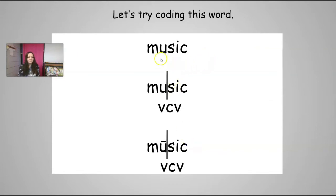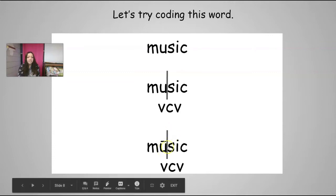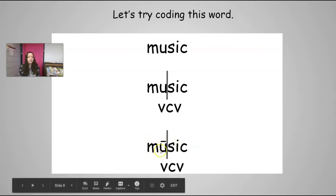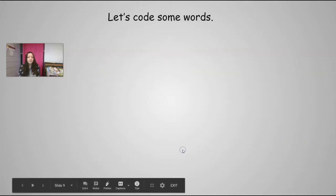Let's try this word. I've got vowels U and I with a consonant in between. I'm going to break it apart after that first vowel. The U doesn't have anything behind it — it's open, so it's a long U. I have M-U, 'myoo'. Then over here, I've got an I in front of a C, just like a CVC word, so the I is short. 'Mu-sic'. Music. Very good.